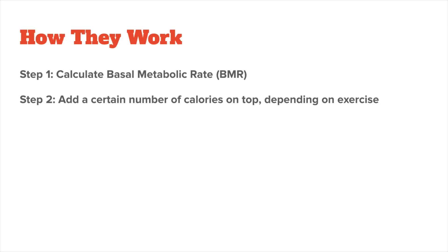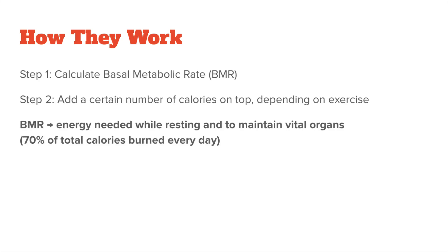All of them work similarly in that they first calculate your basal metabolic rate, or BMR, and then add a certain number of calories on top, depending on how often you exercise. The basal metabolic rate is the number of calories needed while resting when the digestive system is inactive — it's like figuring out how much gas a car consumes while parked. In such a state, energy will be used only to maintain vital organs, which include the heart, lungs, kidneys, nervous system, intestines, liver, muscles, and skin.